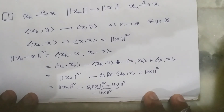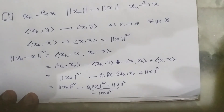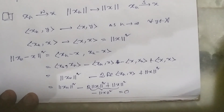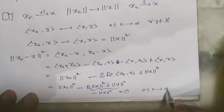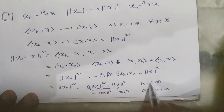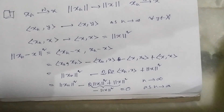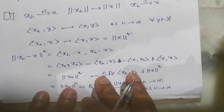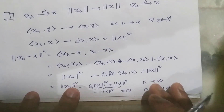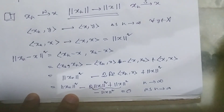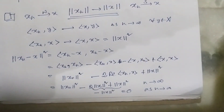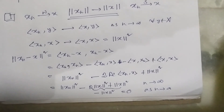As n tends to infinity, combining all these terms, we have norm squared of xn minus norm squared of x, which tends to 0. The extra condition we need is that the norm of xn tends to the norm of x, so that this expression equals 0 as n tends to infinity. That property is the key additional condition required to conclude strong convergence from weak convergence.